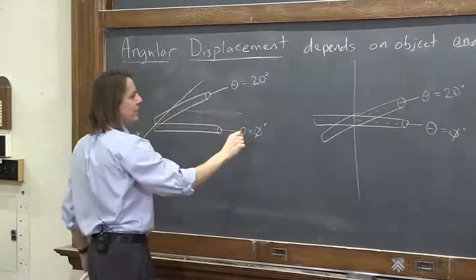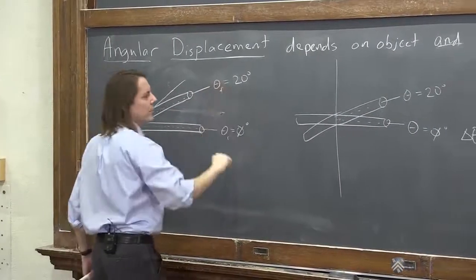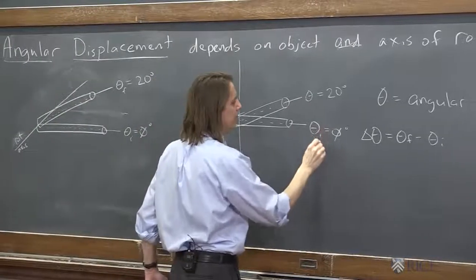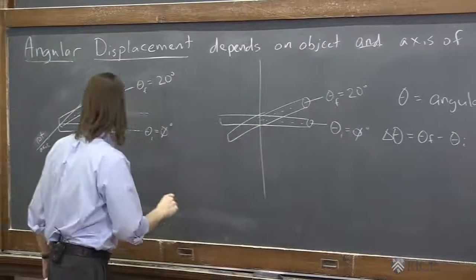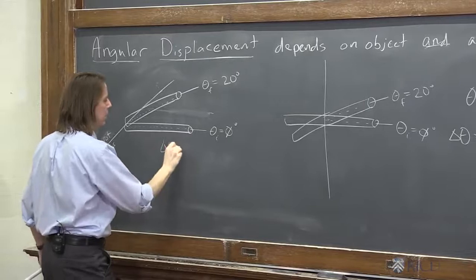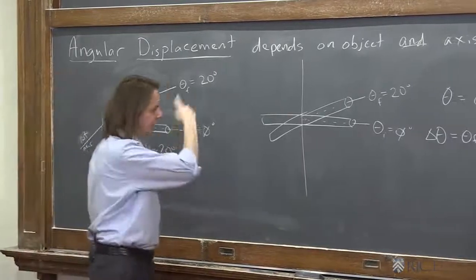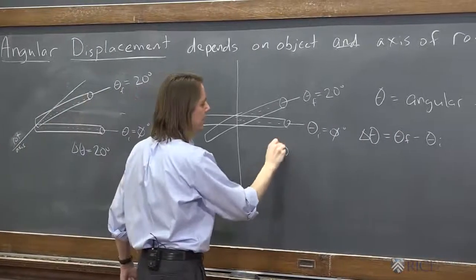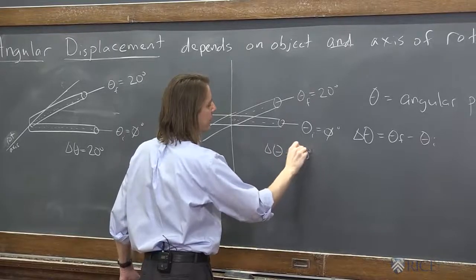So since our initial thetas here are both 0, the displacements are also both 20 degrees. All right, so delta theta here is 20 degrees final minus initial. Delta theta here is 20 degrees final minus initial.